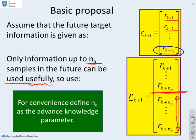For convenience, we're going to define this na as the advance knowledge parameter. How far in the future are we going to allow ourselves to see, or how much future information are we going to put into our performance index?